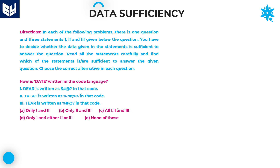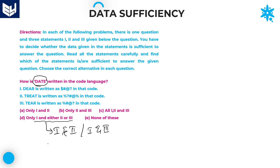Let's move to the next question: How is 'date' written in that code language? This problem also belongs to coding and decoding. Option D means you will get the answer by using statements 1 and 2, or else statements 1 and 3. Let's first go with option A.